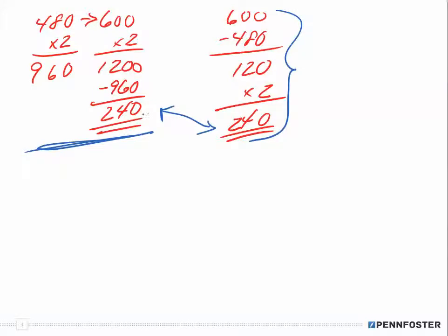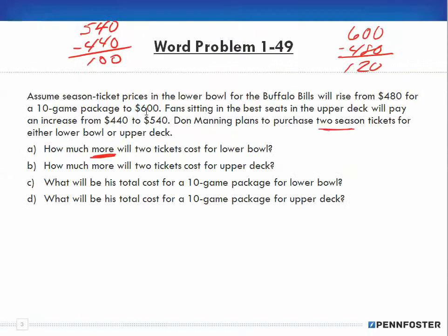When you have less steps to take, that means you're less prone to making errors. By storing that information of the $120 in the back of my head, when the question asked me how much more, then I know that's two tickets times that much more and saved me a lot of work.